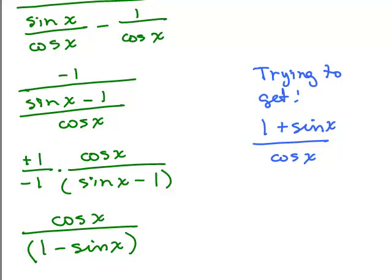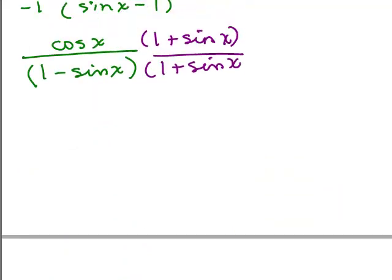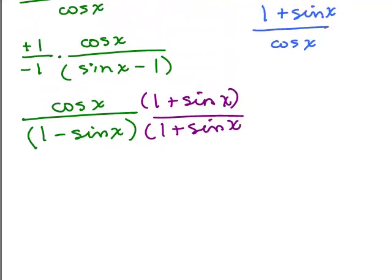So now I'm going to go ahead and multiply numerator and denominator by 1 plus sine x. Alright, so let's see, whoops, that went a little bit too far. Okay. So in the denominator, let's see, and so in the numerator, I have cosine x times 1 plus sine x and check it out. Look what I'm trying to get. I'm trying to get a 1 plus sine x in the numerator. So I'm getting closer.